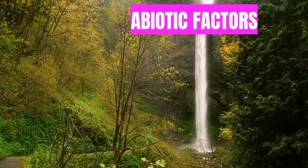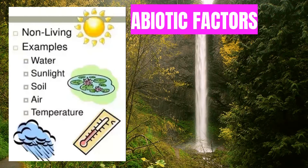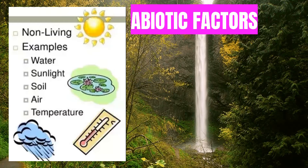Abiotic factors are non-living parts of an ecosystem that shape its environment. Examples of abiotic factors are water, sunlight, soil, air, and temperature.